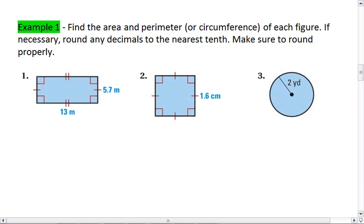First thing I like to do is identify what shape I'm working with. In this first one, I have four right angles and two pairs of congruent sides, which means it's not a square because it's not equilateral. It is a rectangle.